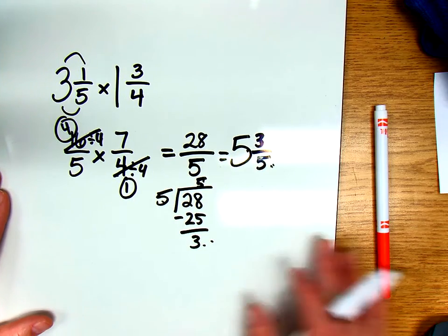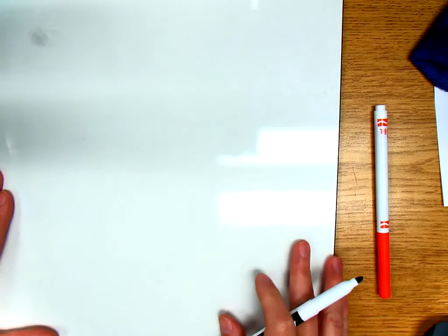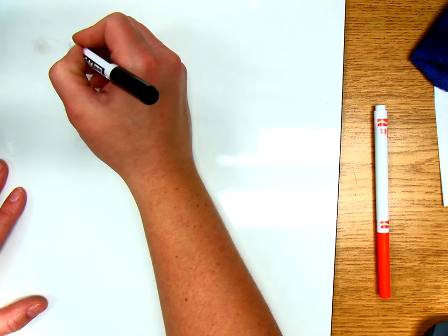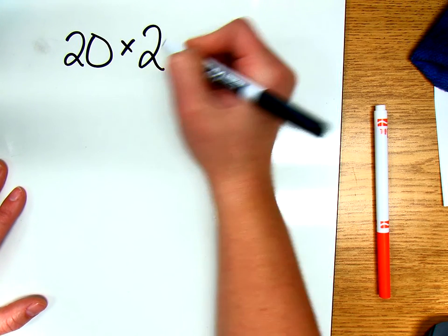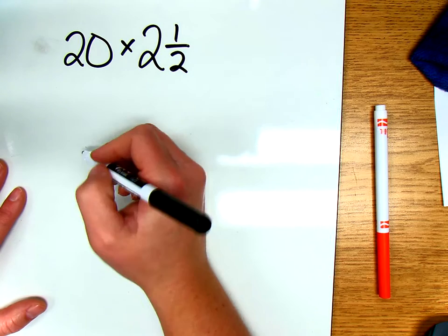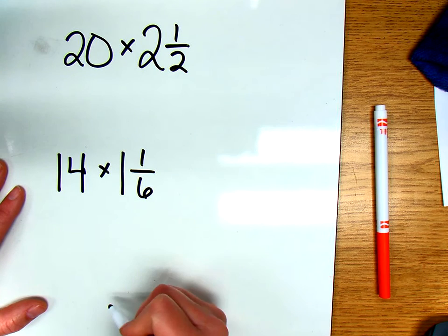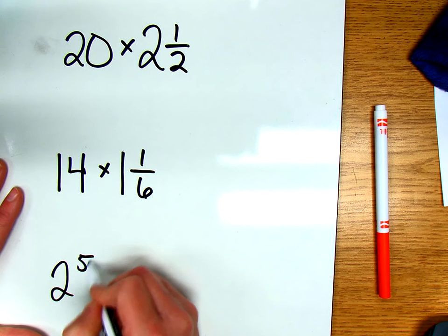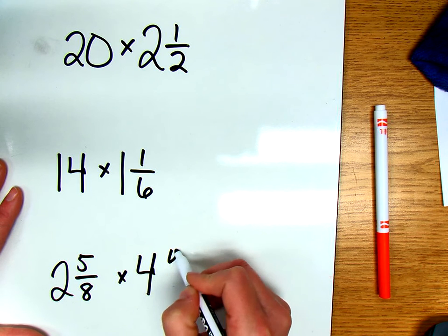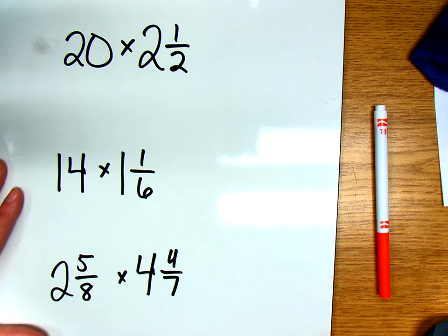All right, next I'm going to give you a couple problems. Feel free to pause and solve and then we can come back and check them. I'm not going to walk through this one, but the first problem would be 20 times 2 and 1/2. The next problem will be 14 times 1 and 1/6, and then 2 and 5/8 times 4 and 4/7. I want you to pause it here and see if you can go through and solve those. I'm going to solve them silently and just see if your work matches mine.